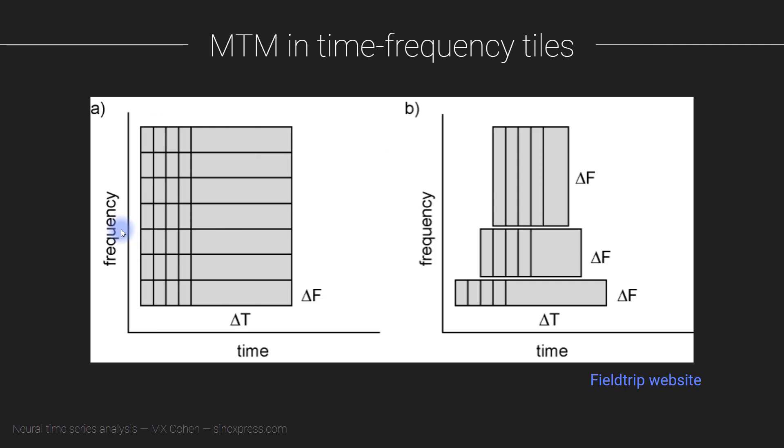So all the steps that I just went through for taking a little snippet of data, doing the tapering with different tapers and doing a Fourier transform and averaging those results together, that would give you one Fourier transform, one power spectrum that you would insert into a time frequency plot.